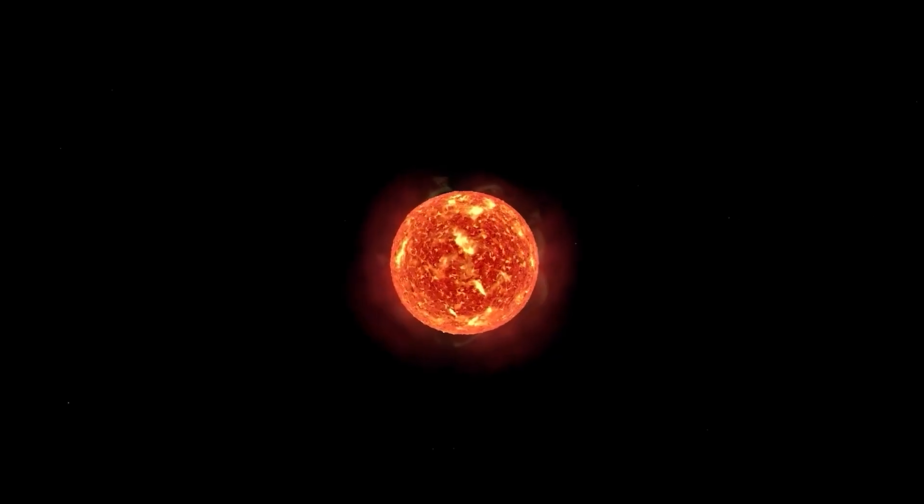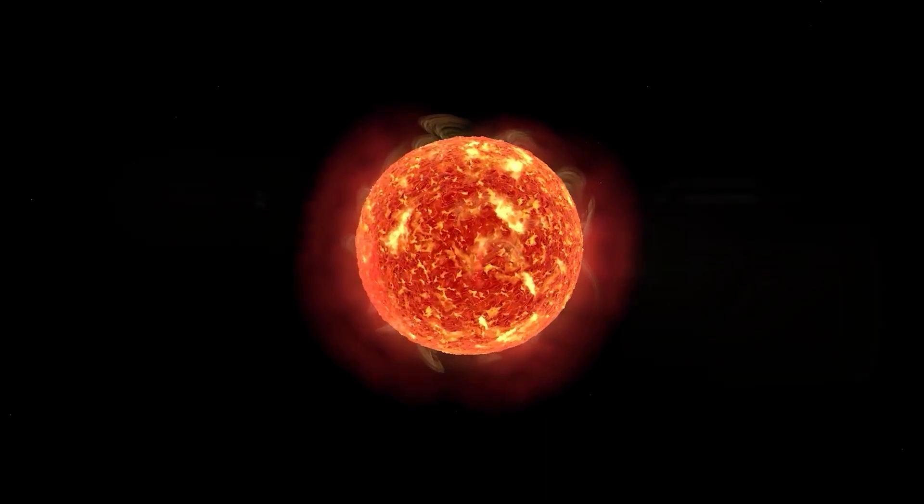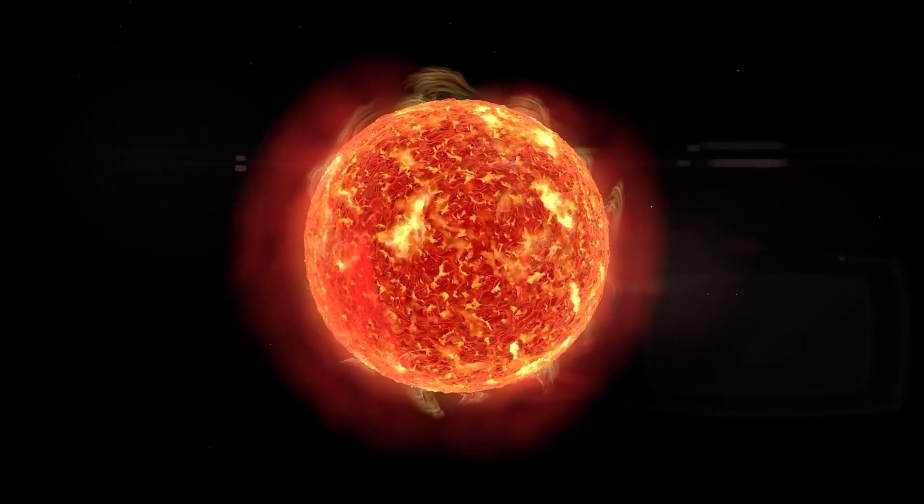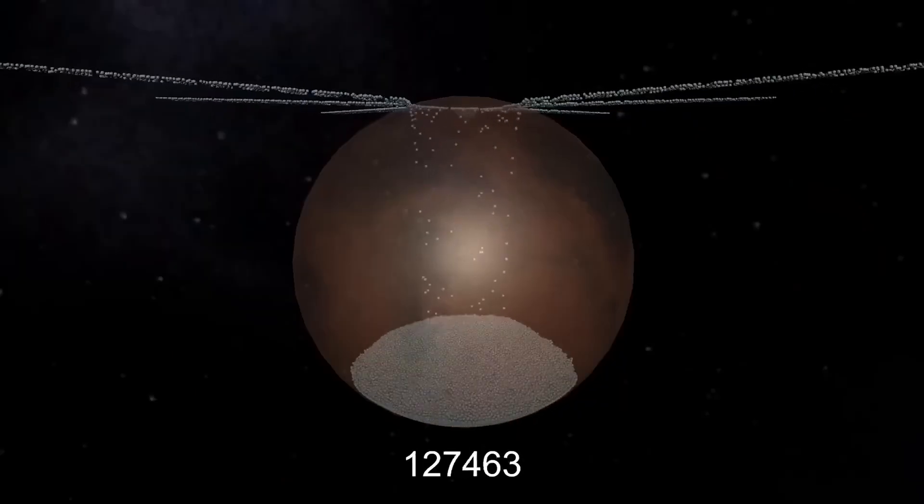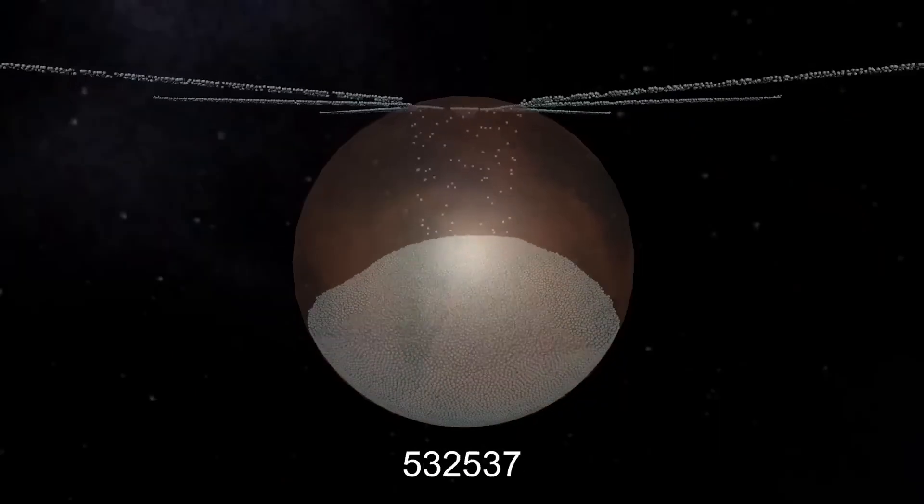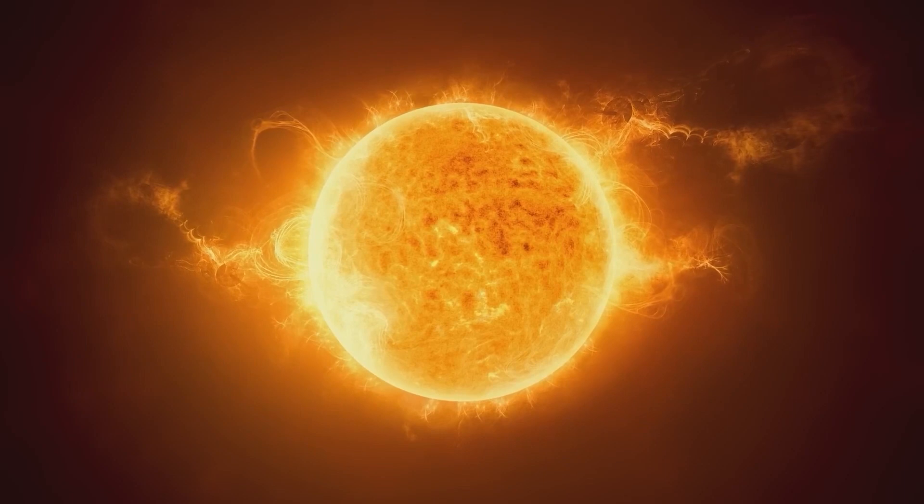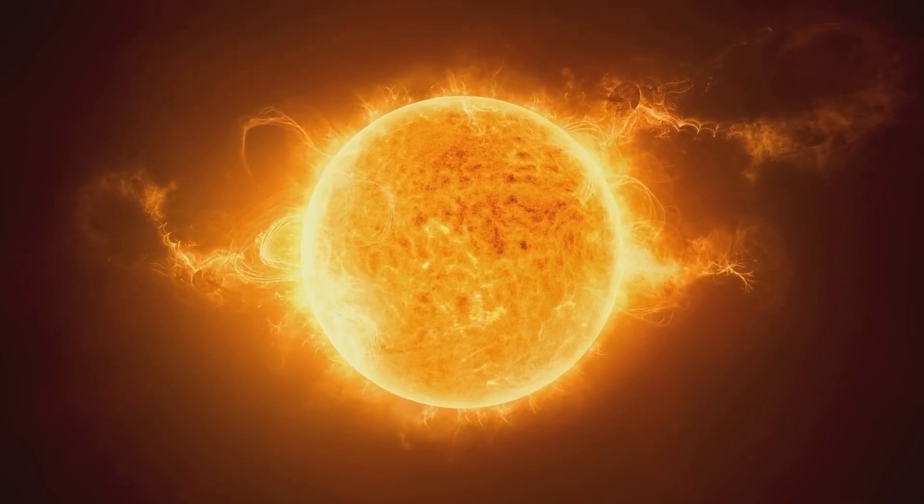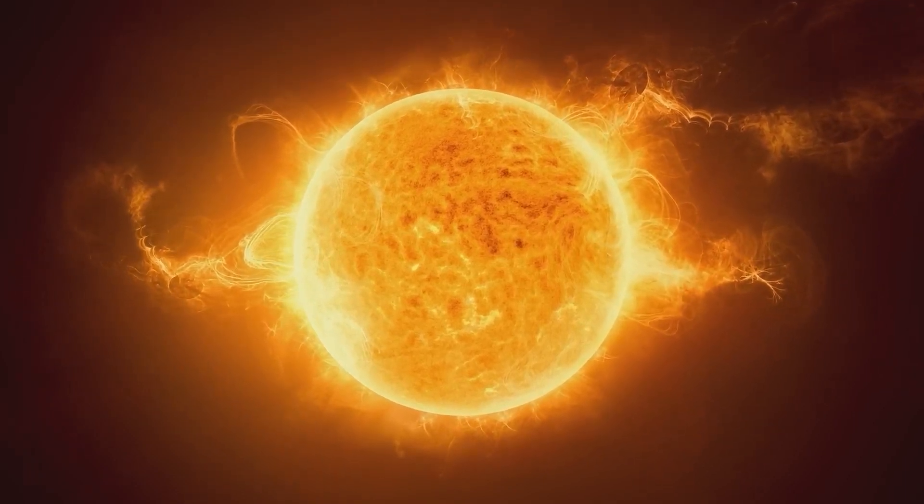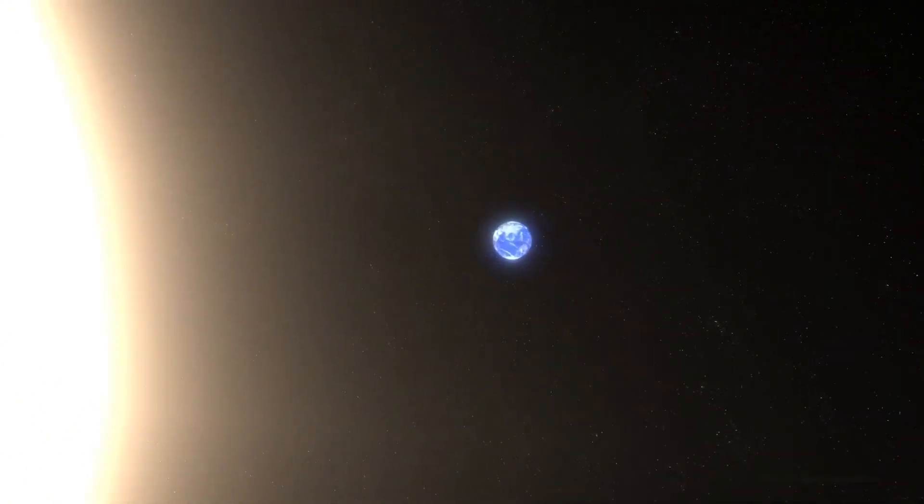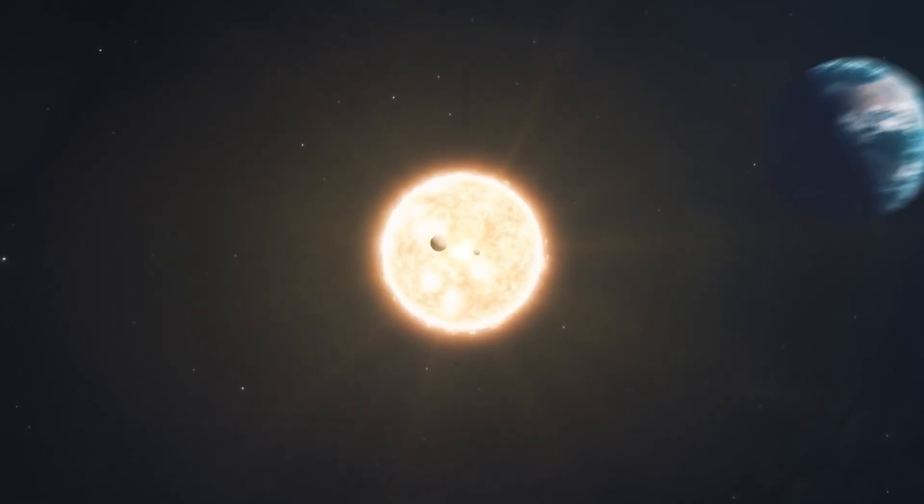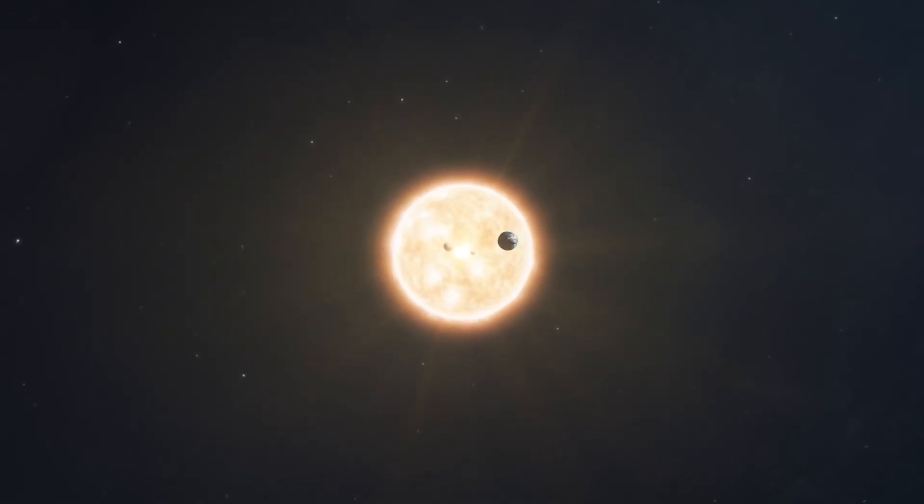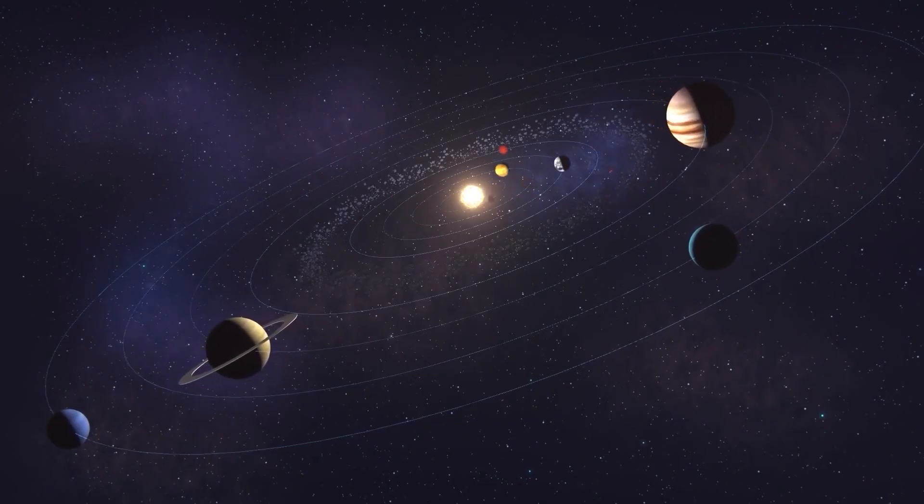When it comes to volume, the sun has a volume of 1.4 by 10 raised to 27 cubic meters. This means that the sun could fit in about 1.3 million Earths. The sun has a mass of 1.989 by 10 to the 30 kilograms, which is about 333,000 times the mass of planet Earth. Did you know that the sun contains about 99.8 percent of the entire mass in our solar system?